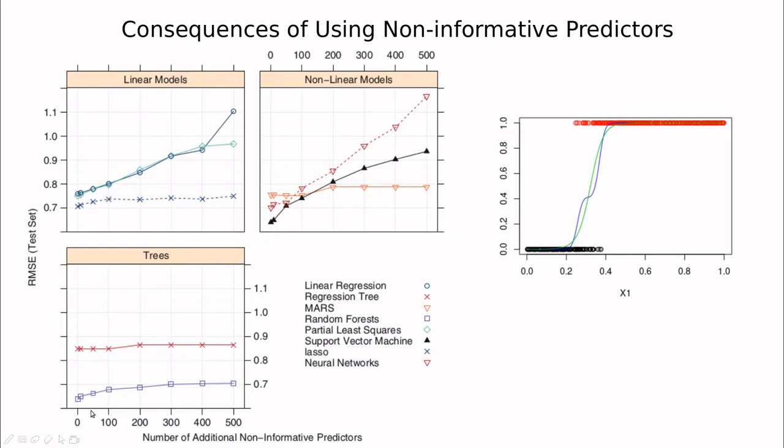But instead of using one variable called x2, they introduced 10, 20, 100, up to 500 values. You could say, okay, this is a huge number of variables, but in big data problems, this is not that large. So this is the summary of their conclusions.